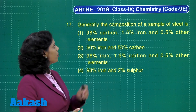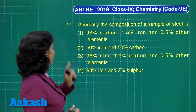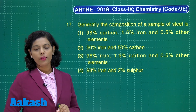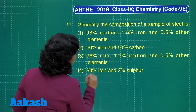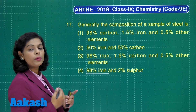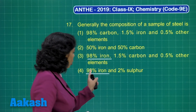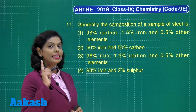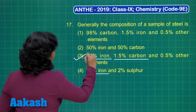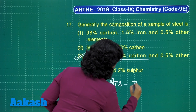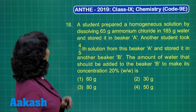Question number 17: generally the composition of a sample of steel is — we have different options given. The major component of steel is iron, approximately 98%. Two options contain 98% iron. In steel there is presence of carbon, not sulfur, so option 4 with 2% sulfur is incorrect. Therefore the correct answer is option 3.